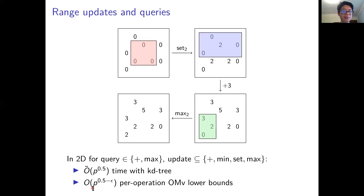We find matching or nearly matching lower bounds predicated on the online matrix vector conjecture. Our lower bounds say there is no solution running in p to the 0.5 minus epsilon for any epsilon greater than 0, unless the online matrix vector conjecture is false.